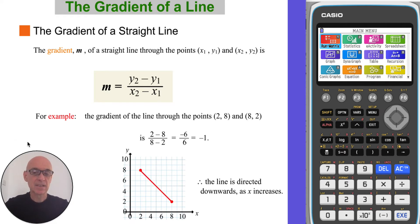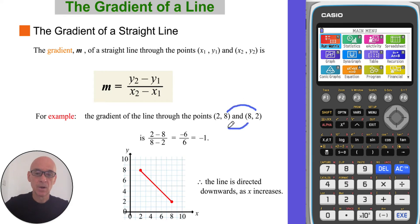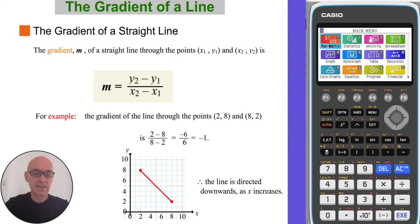In this last example, the gradient of the line through the points given, found by calculating y2 minus y1 over x2 minus x1, gives a gradient equal to negative 1. As this is a negative value, the line is directed downwards as x increases, as shown in the diagram.